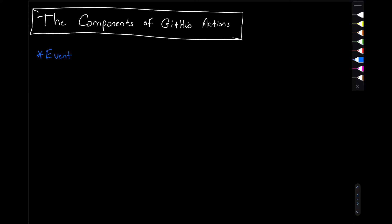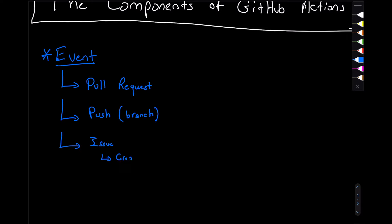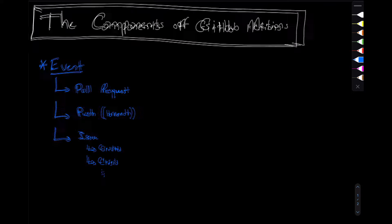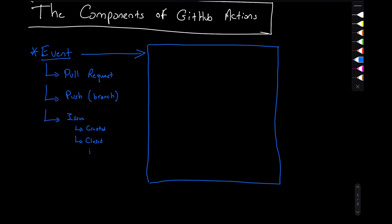Everything starts with an event. We have so many different events that can trigger workflow runs. Some examples of those are pull requests. It could be a push to a specific branch that we specify, or it could be events related to issues — whether we create an issue, close an issue, edit an issue, reopen an issue, so on and so forth. Events are tied to workflows, and they trigger the workflow runs. In each workflow, we should have at least one job.